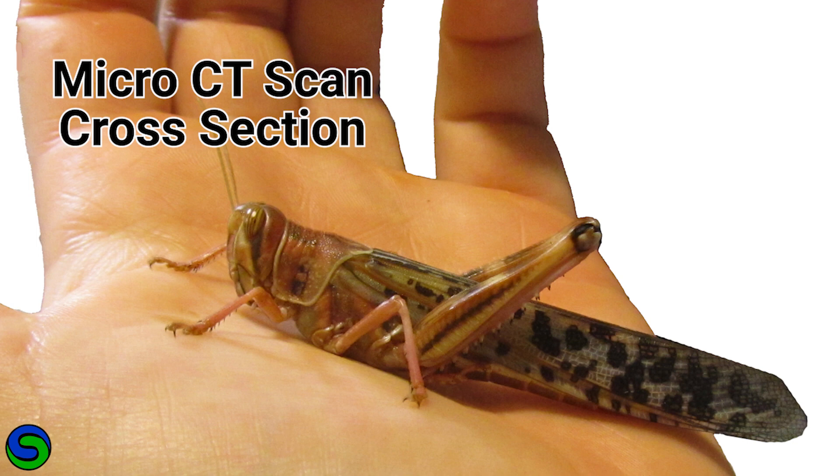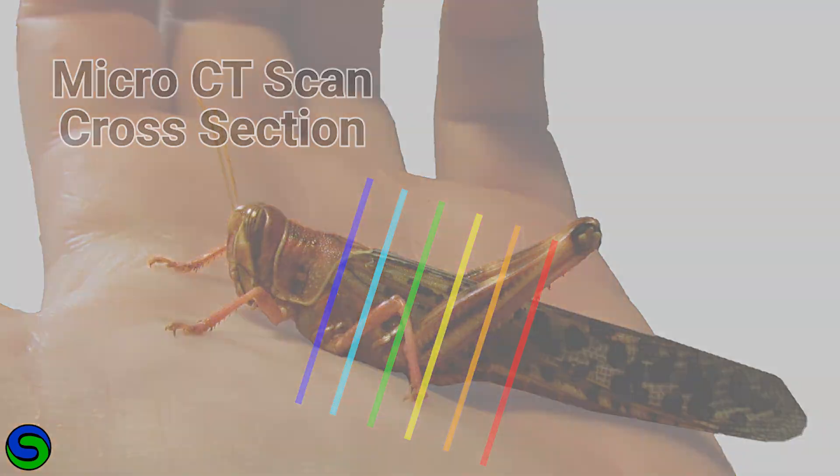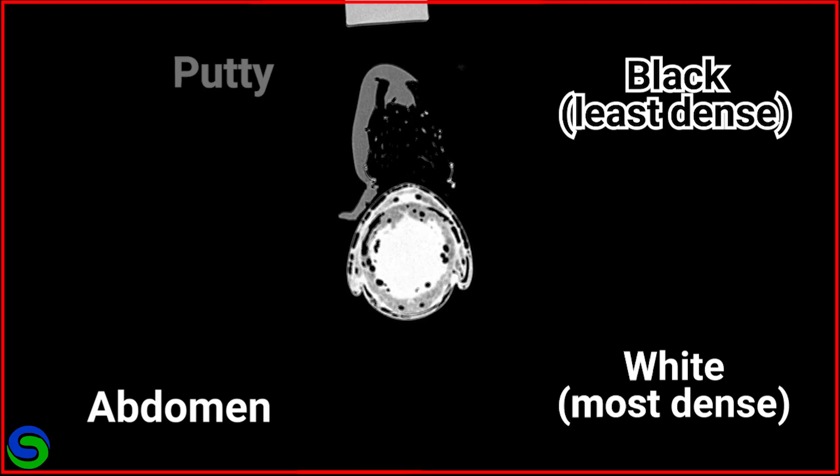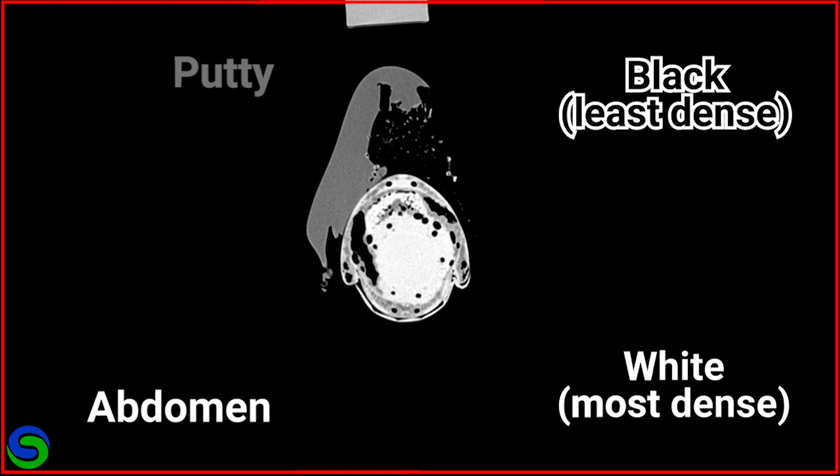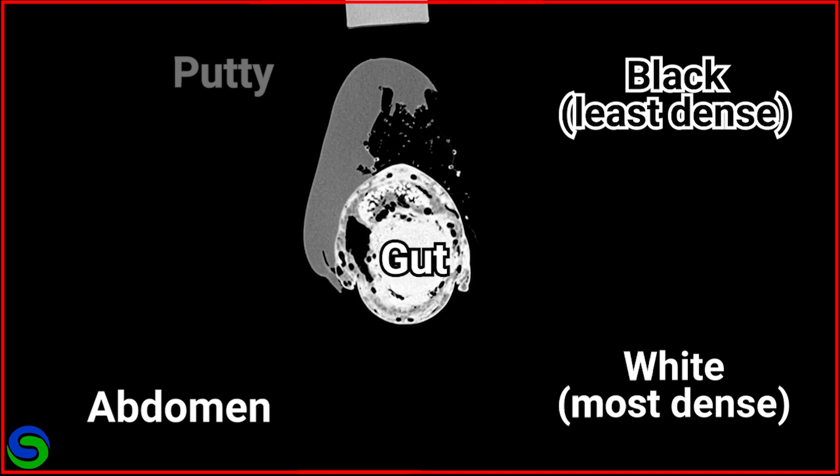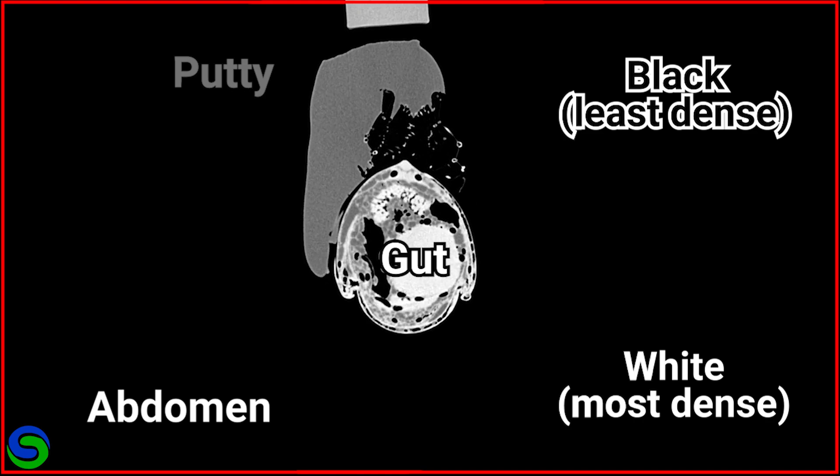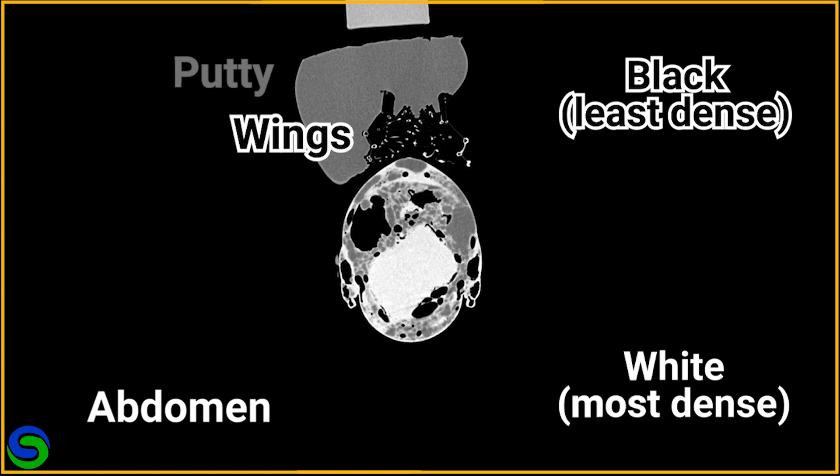To visualize the tympana and the surrounding tissues, I scanned the insect with a micro-CT scan from the abdomen to the head. In this scan, the black is the least dense areas, like air pockets, while the white is the most dense tissues, like the gut. The hollow wings can be seen at the top, held in place by gray putty.